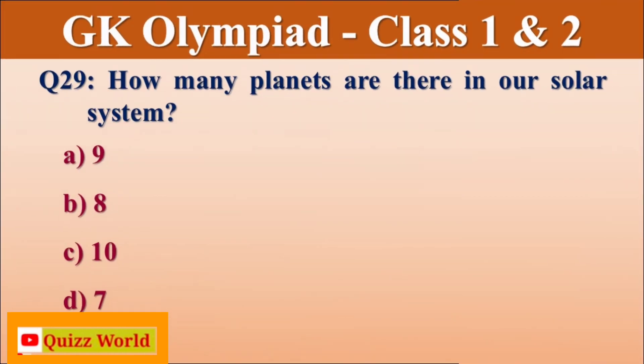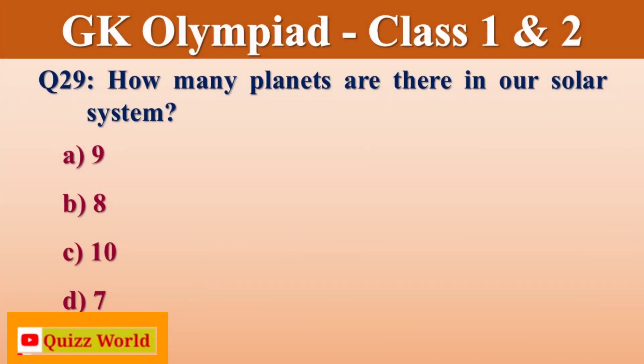How many planets are there in our solar system? 9, 8, 10, 7.